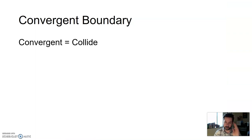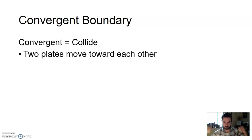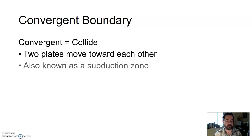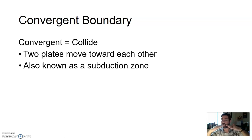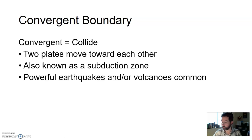A convergent boundary — when you think convergent, think collide. This is when two plates are moving towards each other. As they collide, one typically gets pushed underneath the other, which is known as a subduction zone. They don't just crash and keep piling up; something's got to give and eventually gets pushed down. Powerful earthquakes and volcanoes are very common near convergent boundaries, making it a dangerous type of boundary to live near.